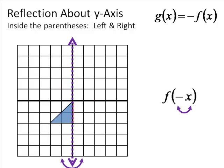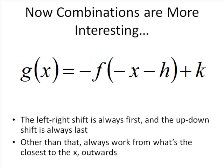Left-right reflection works even if the shape is crossing — you can still reflect it, just like you'd expect. The combinations get a little more fun. Remember: the left-right shift is always first, the up-down shift is always last. Aside from that, work from closest to x — inside the parentheses — and then work your way out. So with an inside flip, an inside shift, an outside flip, and an outside shift: inside shift first, then inside flip, then outside flip, then outside shift last.